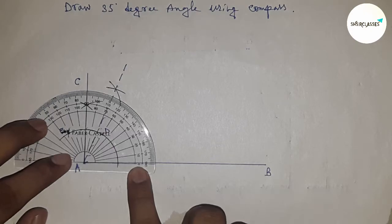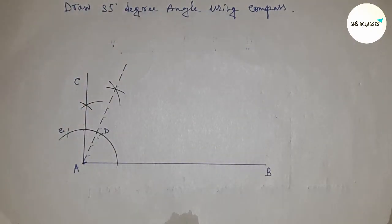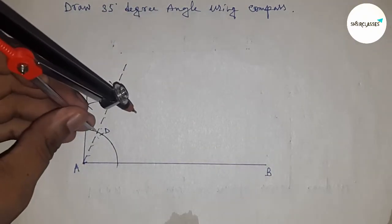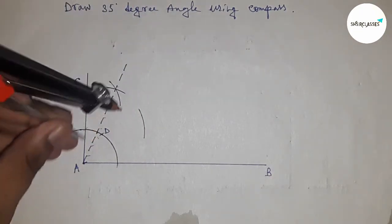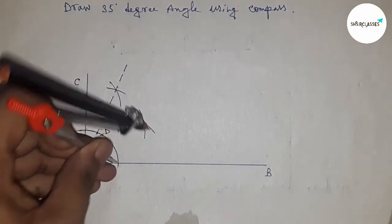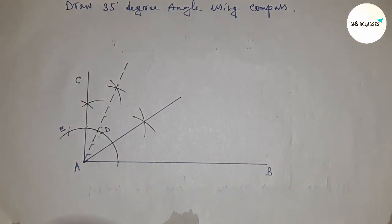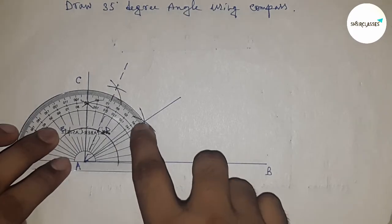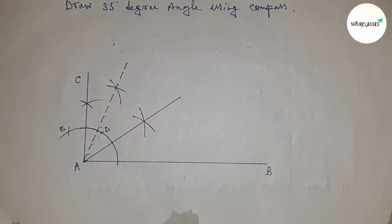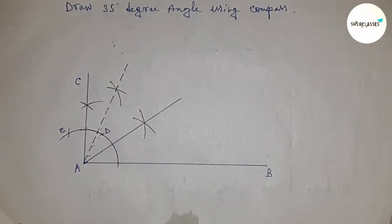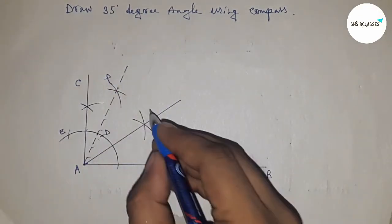Next, we have to bisect the 70-degree angle. Take any length and draw an arc here. Put the compass here and cut the arc. Join this line, and we got a 35-degree angle. This is perfectly 35 degrees. This is point Q.